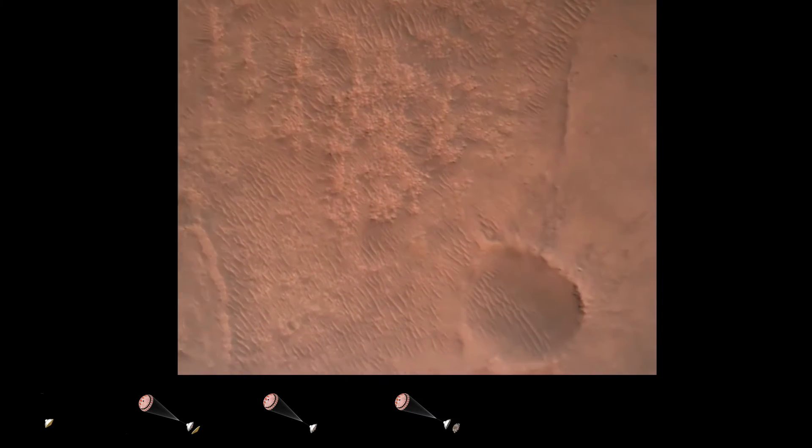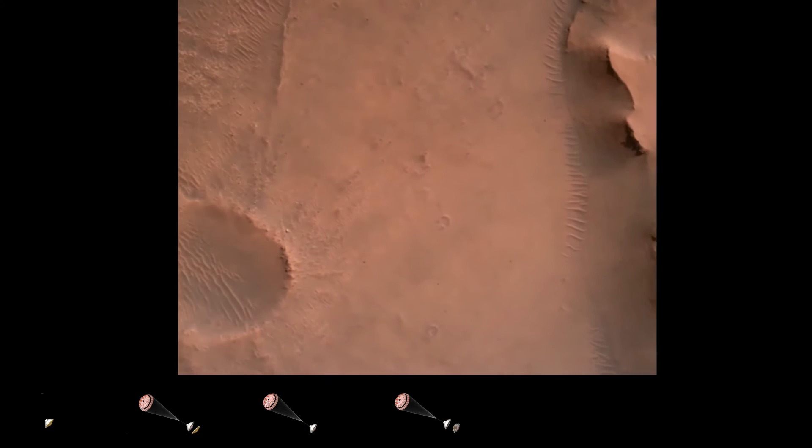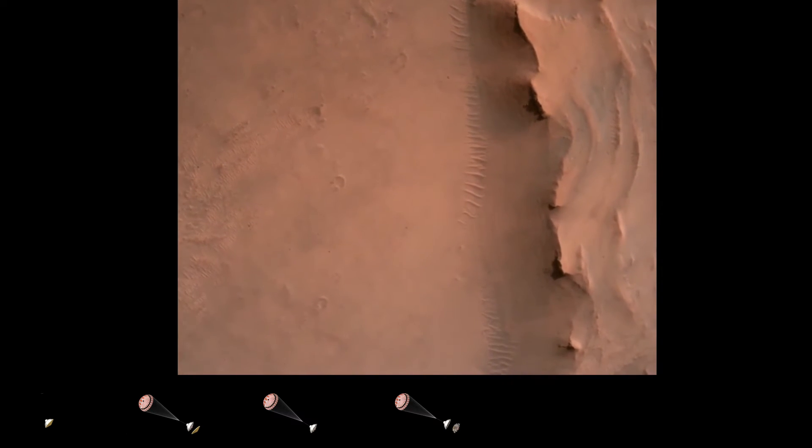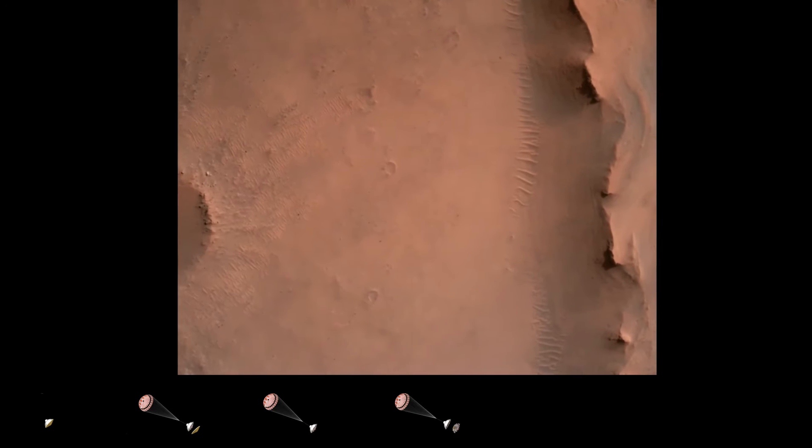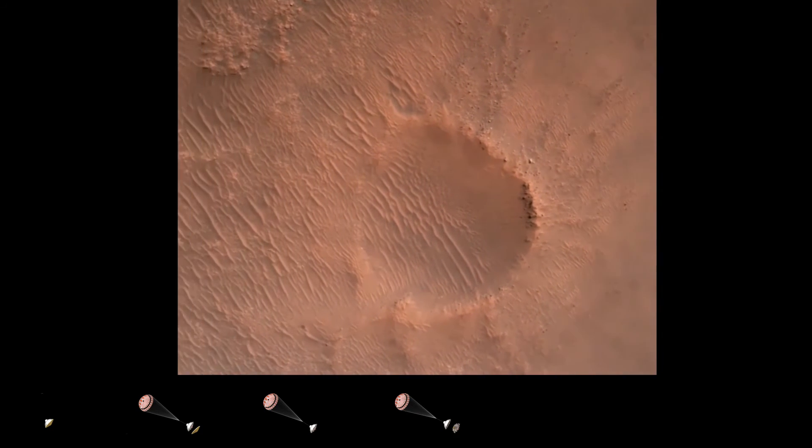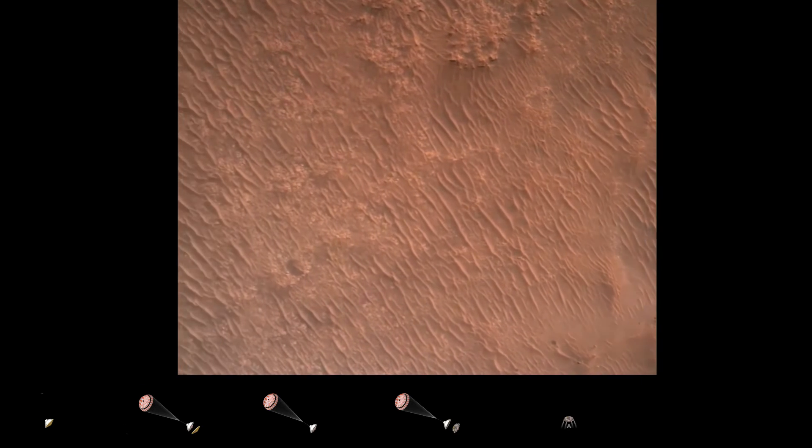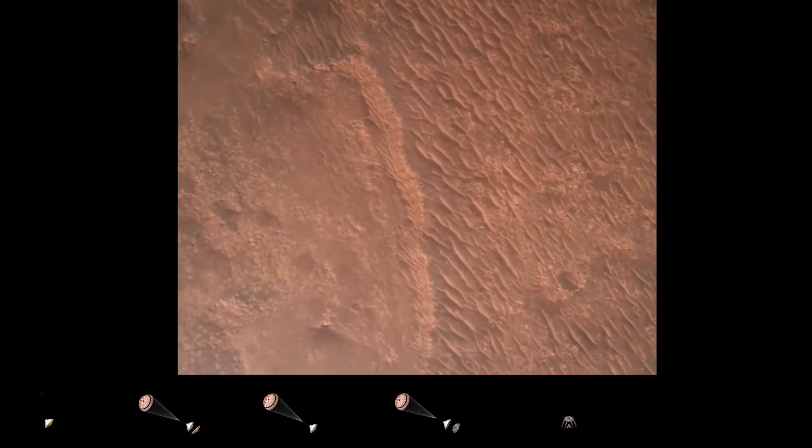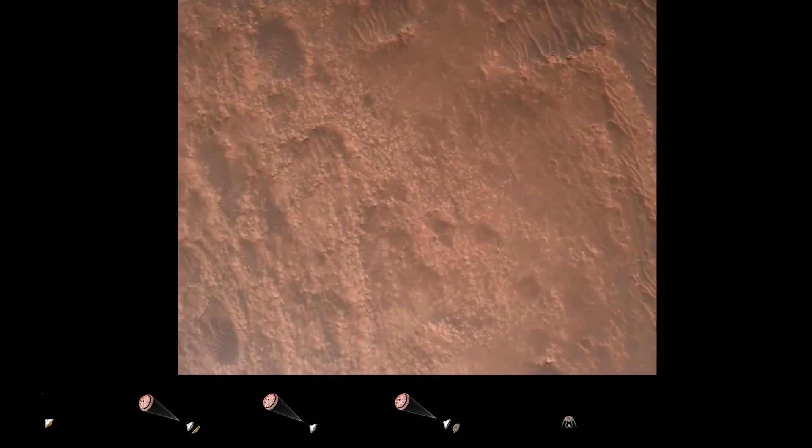Back shell set. Current velocity is 83 meters per second, at about 2.6 kilometers from the surface of Mars. We have confirmation that the back shell has separated. We are currently performing the divert maneuver. Current velocity is about 75 meters per second, at an altitude of about a kilometer off the surface of Mars.